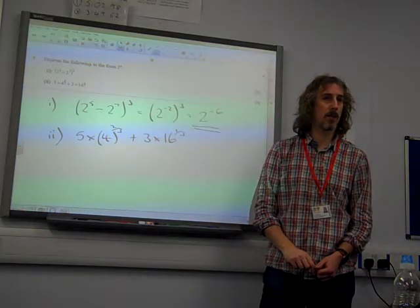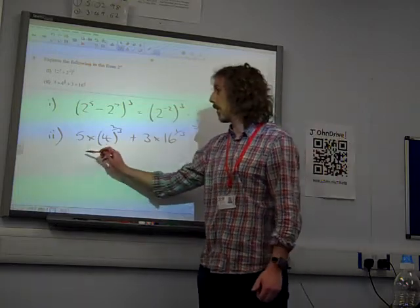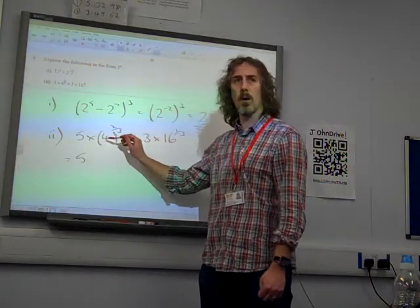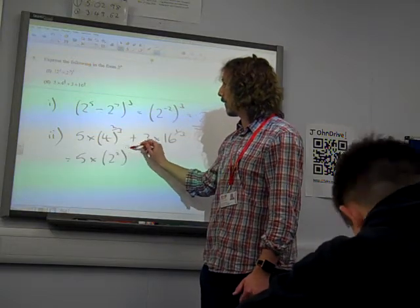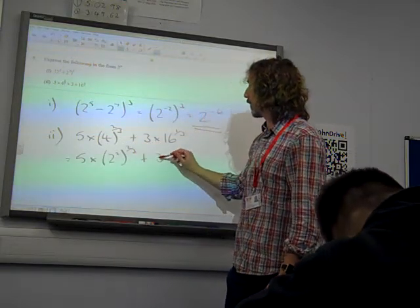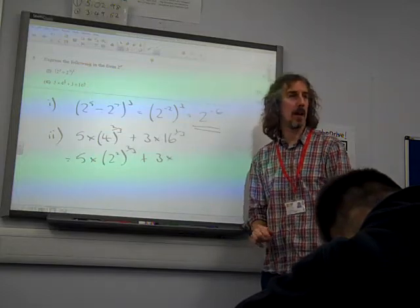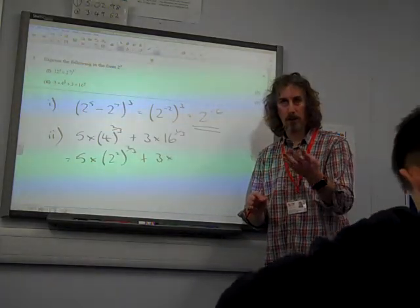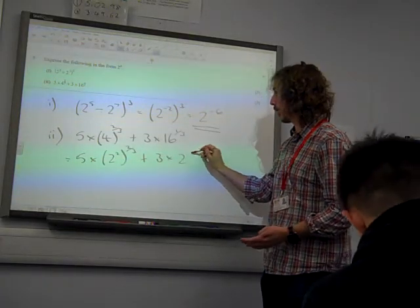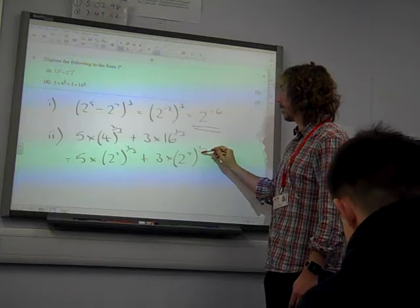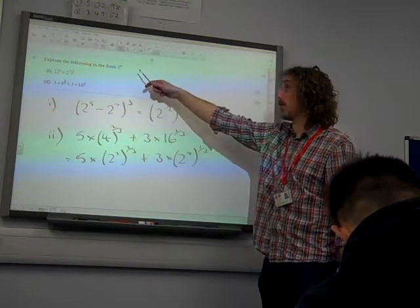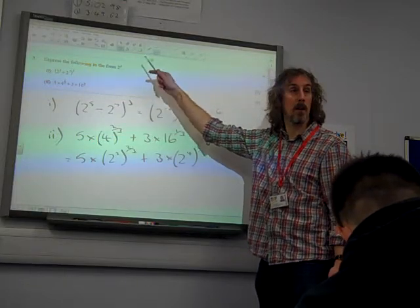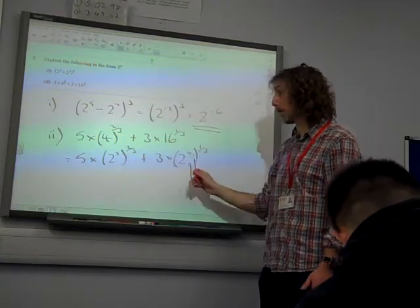So let's work in terms of base 2. The first bit, 4 is 2 squared, so that's 5 times 2 squared to the 2 thirds. 16 is 2 to the power of 4 to the 3rd. So that's got to be our first thing, the question said write it in the form 2 to the something. So we've got to get it in the form of 2 to the something first.